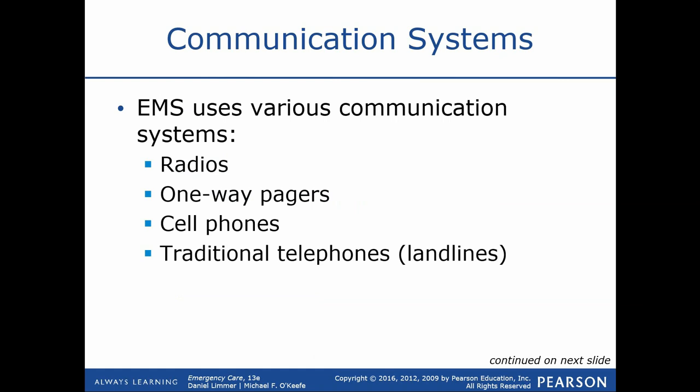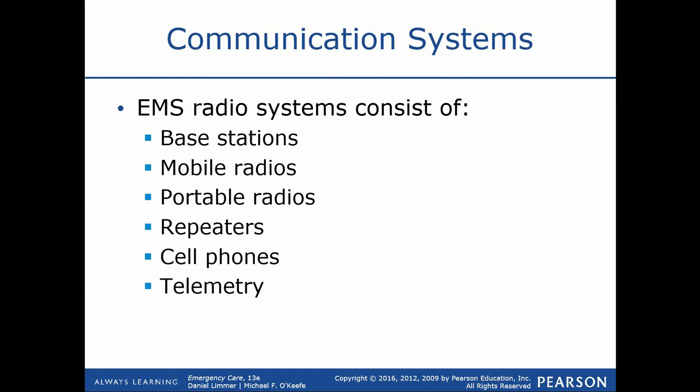Looking at communication systems and radio communication, we use radios and cell phones both to communicate on a daily basis when doing our jobs. Radios allow for two-way communication. One-way pagers are still used — they receive communication but you cannot talk back through them. Cell phones are familiar to everyone, and then there are traditional landlines, which you'll use from time to time at the hospital, fire station, or EMS station.